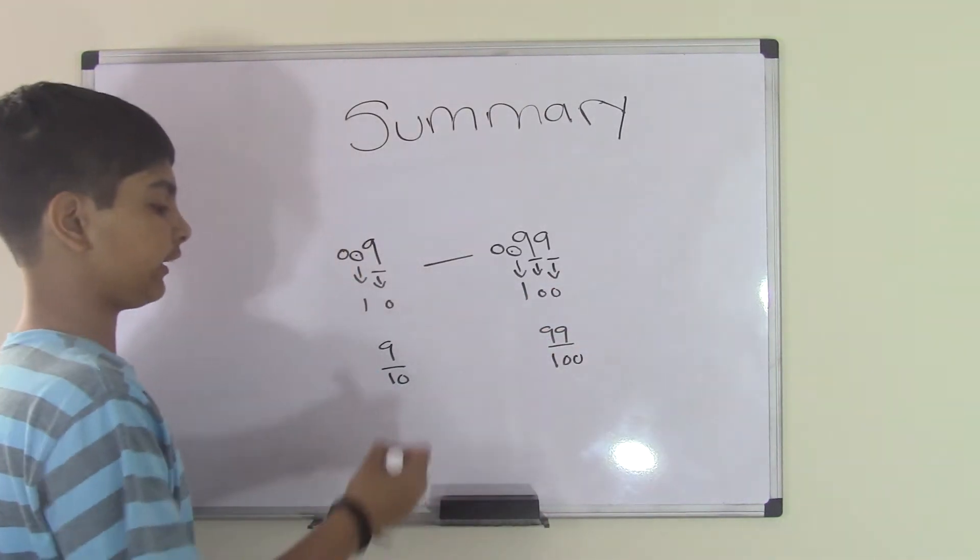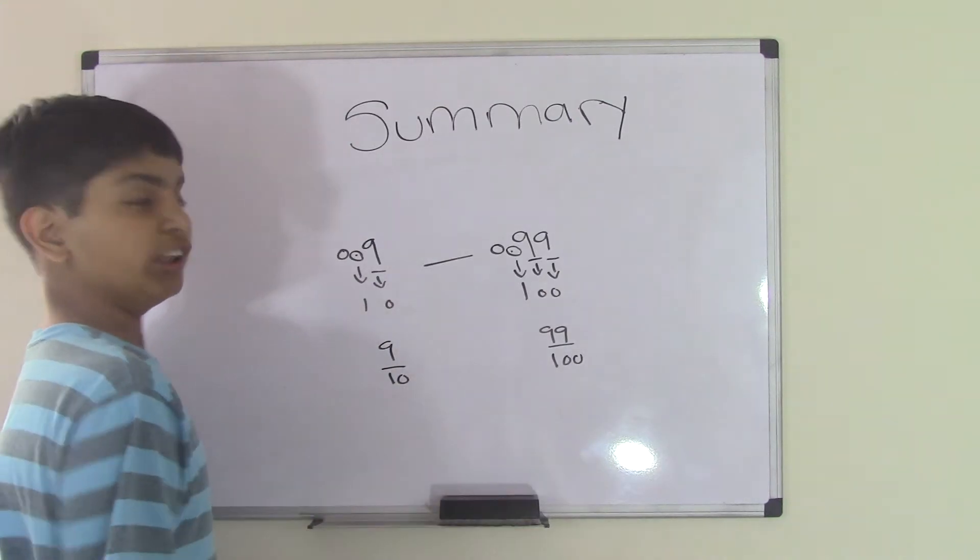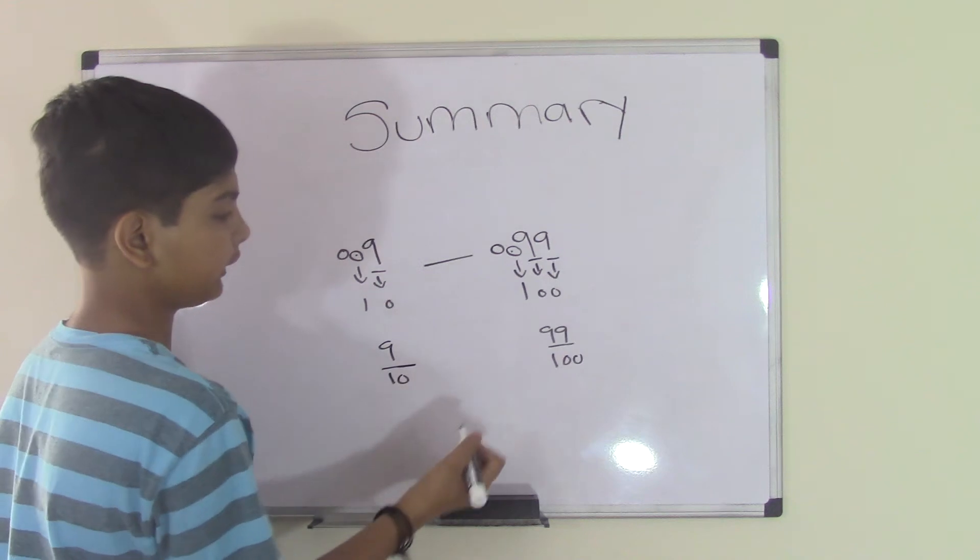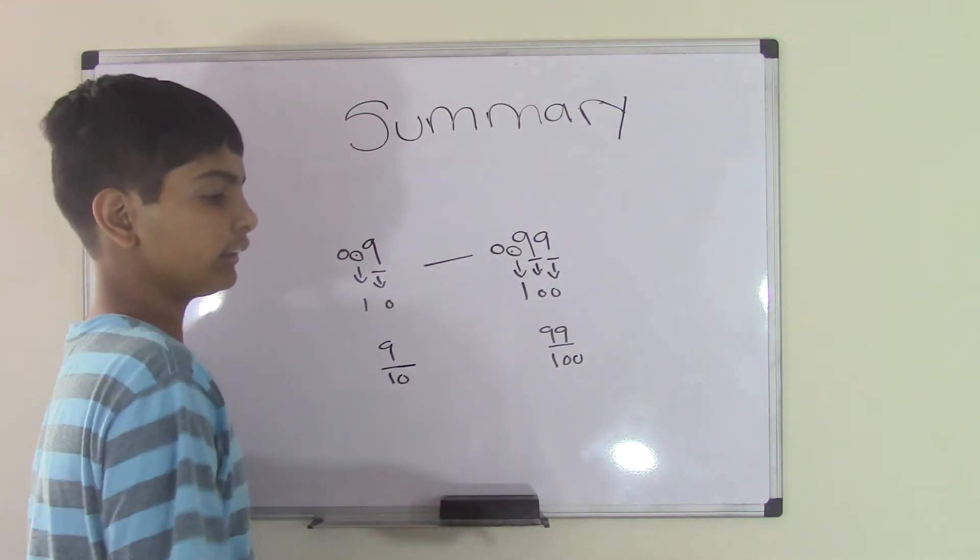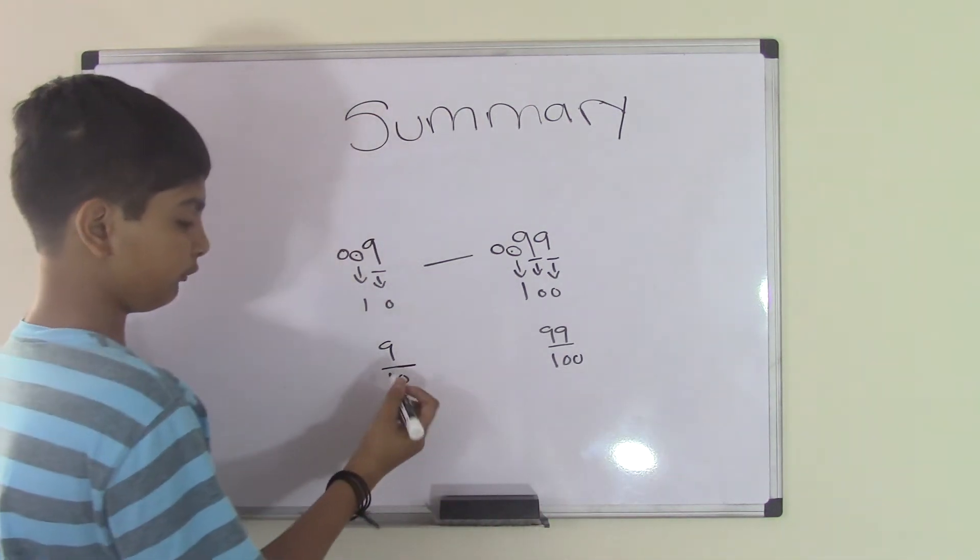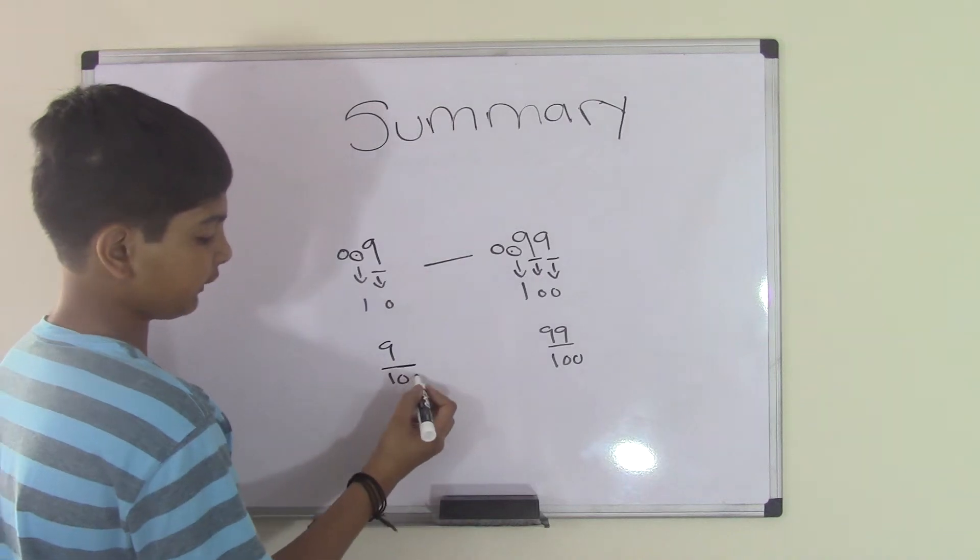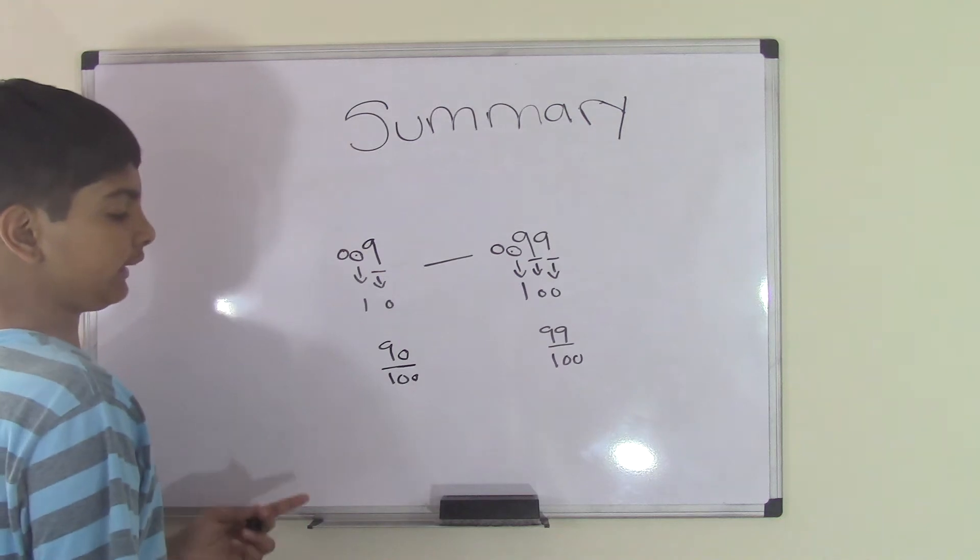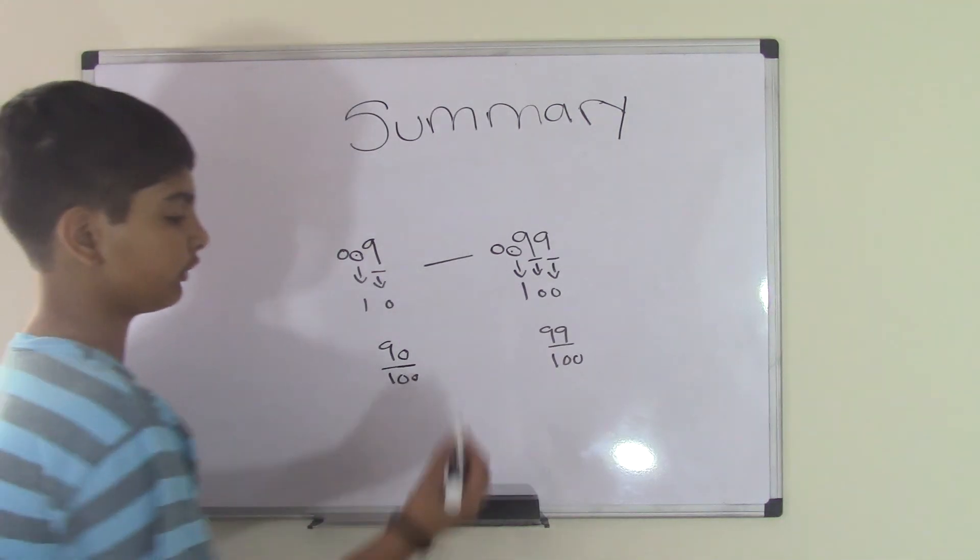Now this is kind of unusual. We get a tenth and we get a hundredth. To make this simpler, all we need to do is make the tenth into hundredth, because we cannot make the hundredth into tenth. We need to just add a 0 in front of the tenth and do the same thing on top. Add a 0 onto the 9, so make that 90 over 100 and 99 over 100.